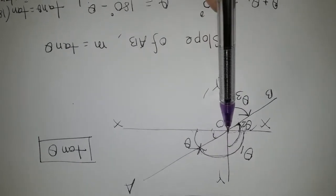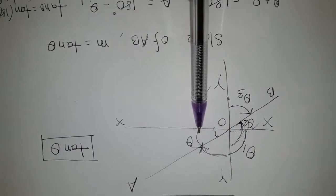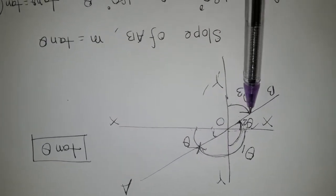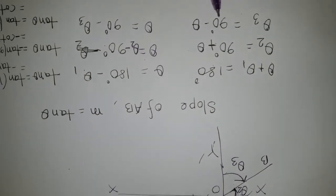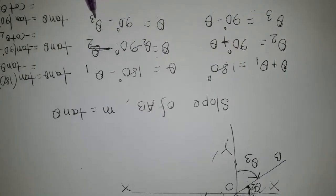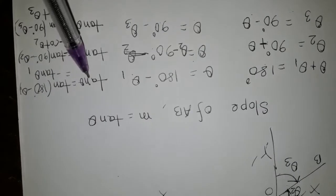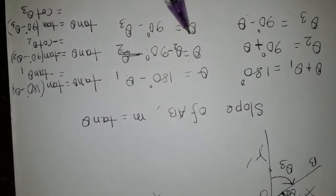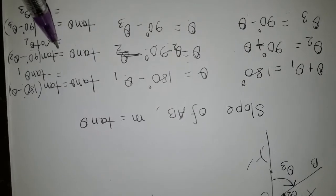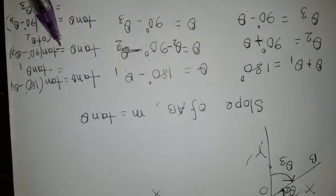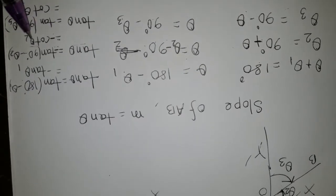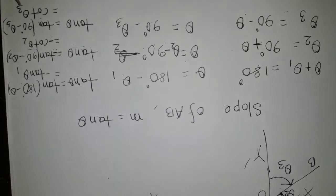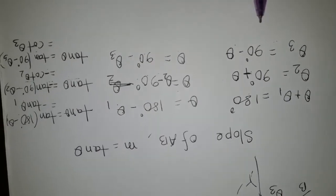Subtracting from 90 degrees minus theta, you can get theta 3. So theta 3 equals 90 degrees minus theta, and theta equals 90 degrees minus theta 3. If we take tan of both sides of this equation, we get tan theta equals negative tan theta 1. And tan theta equals negative of tan(90 degrees minus theta 2), which gives minus cot theta 2. Finally, tan theta equals tan(90 degrees minus theta 3), which is cot theta 3. So the slope of AB will be tan theta.